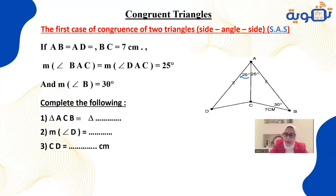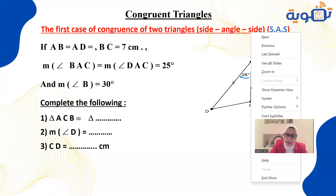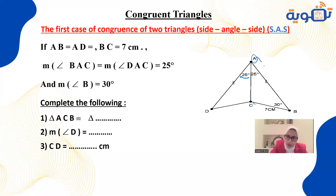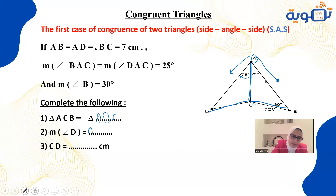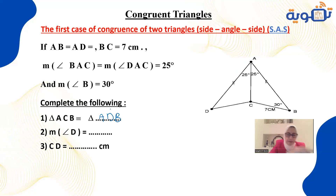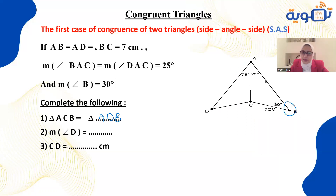Complete: triangle ABC is congruent to triangle ADC. Going from A to D then C. The measurement of angle D corresponds to angle B, which equals 30 degrees. Side CD corresponds to CB, so it equals 7 cm.